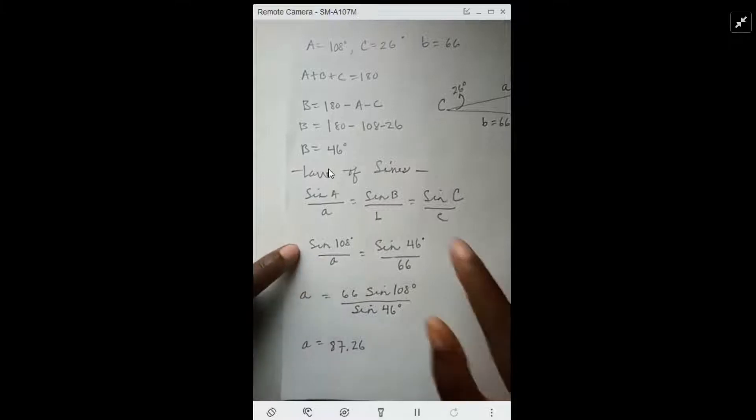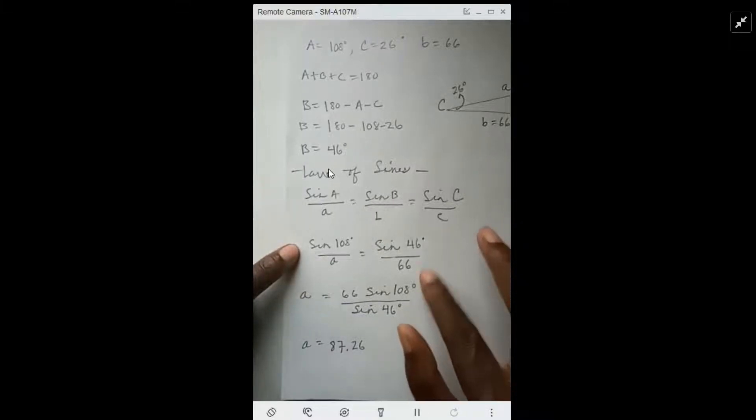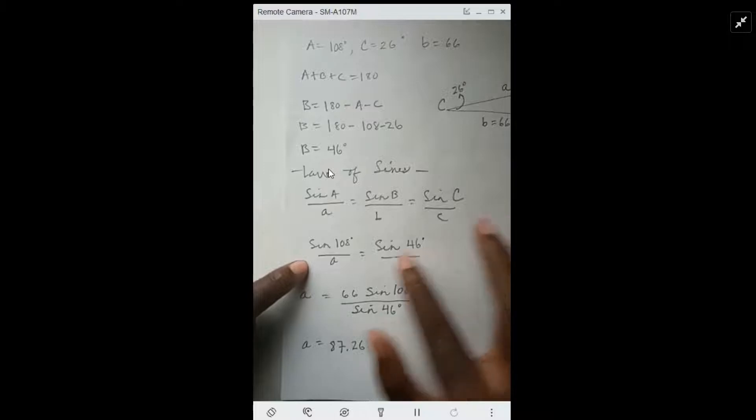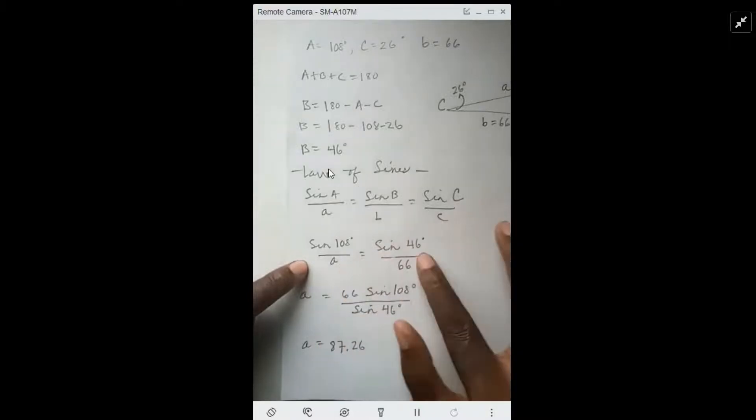Sine of 108 degrees over A equals sine of 46 degrees over 66. If we do some quick algebra and take the reciprocal, it's 66 over sine of 46 times sine of 108, where A comes out to be 87.26.